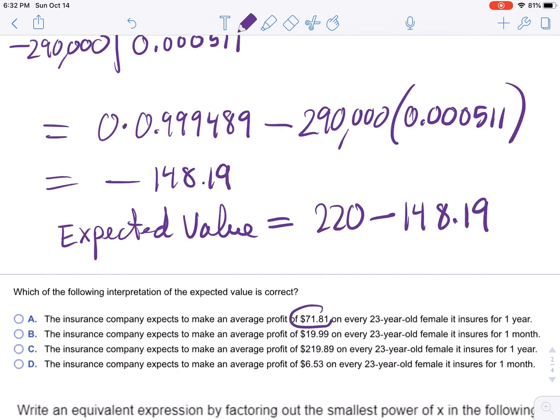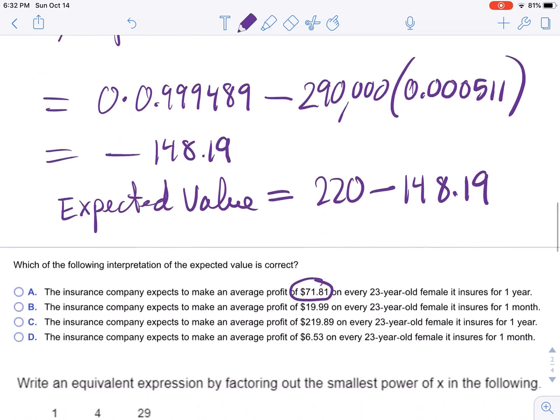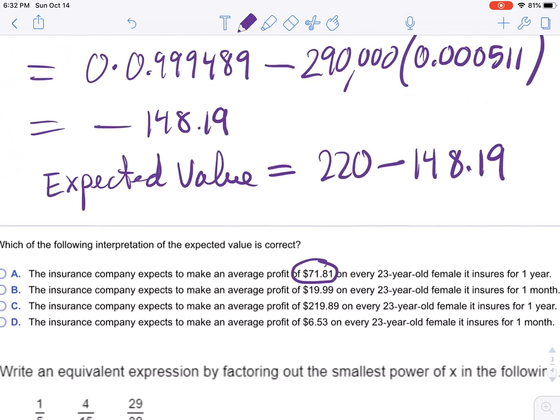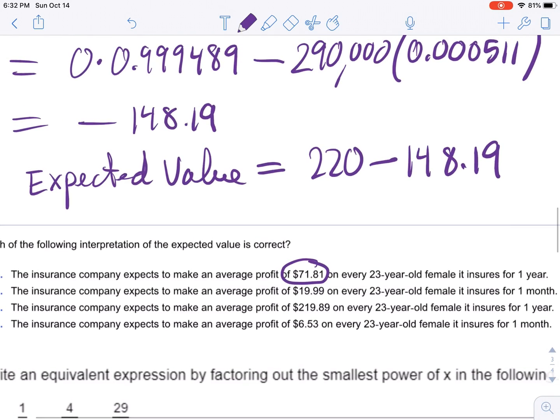What's the interpretation? The insurance company... Now notice how they're never really going to make a profit of exactly $71.81. They're either going to pay out $290,000 or keep $220. So it's interesting that the expected profit to the company is $71.81.